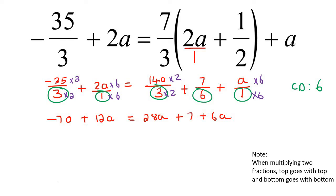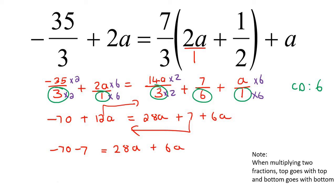Now we are back at the very first lesson of this chapter, where you've just got variables and numbers and you need to move things around — see how we're building on previous lessons. I'm going to take all the variables to the right and all the numbers to the left. On the left-hand side we'd have minus 70 minus 7, because when this one comes over it becomes negative. On the right-hand side we have 28a plus 6a minus 12a. So on the left we have minus 77, and on the right we end up with 22a.